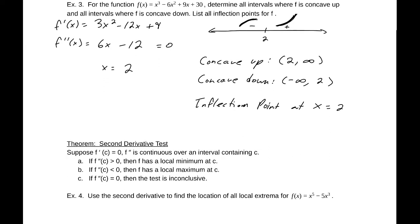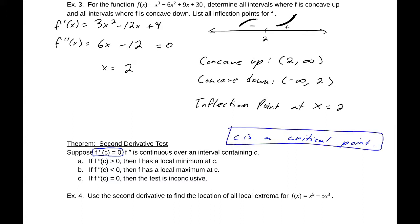Because the first derivative can tell us about local minima and maxima, the second derivative can as well. This theorem is called the second derivative test. Suppose f'(c) = 0 — that is, c is a critical point. If f'' is continuous and f''(c) > 0, the function is concave up at that critical point, so it has a local minimum. If f''(c) < 0, the function is concave down, so it has a local maximum. If f''(c) = 0, the test is inconclusive, and we fall back on the first derivative test.